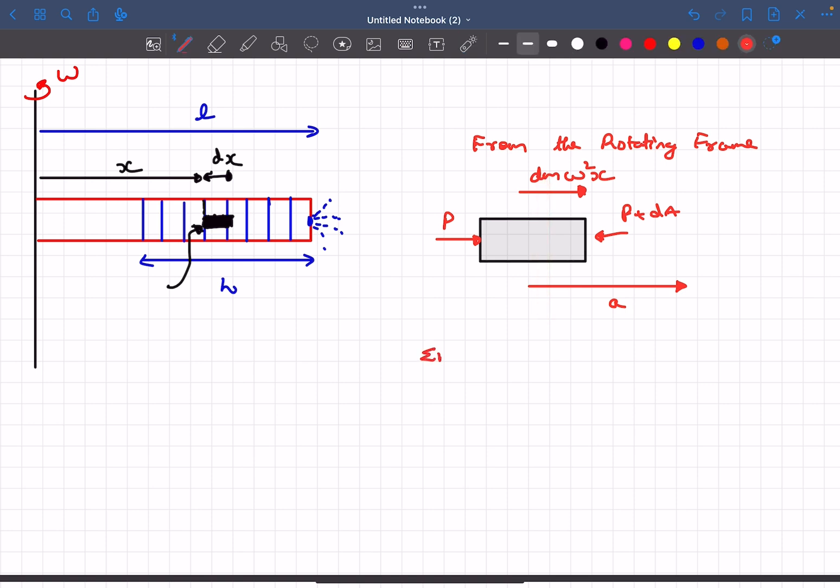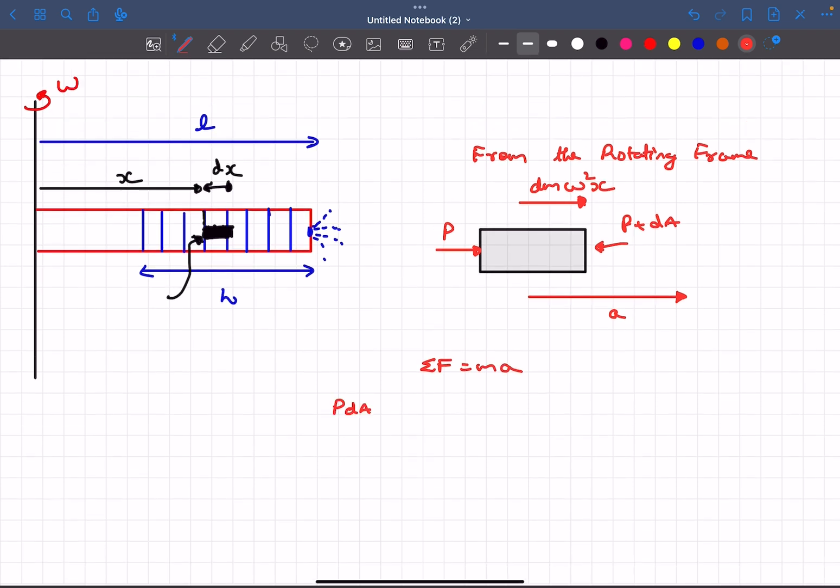Now we'll write sigma F equals ma along the x direction. Let's consider the cross-sectional area as dA. So P dA minus (P + dP) dA plus the mass (density times volume, which is dA times dx) times omega squared x. This is the net force, and this equals mass times acceleration.